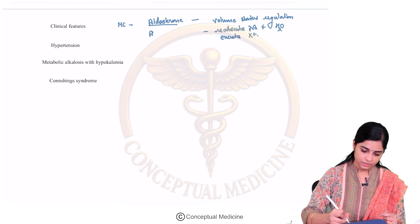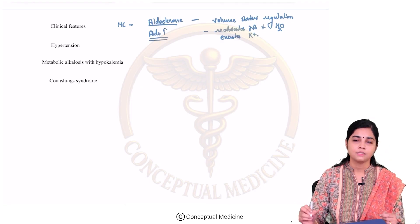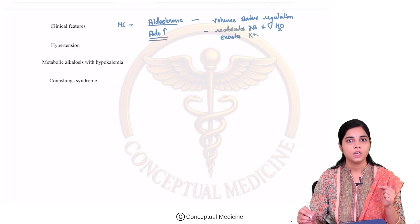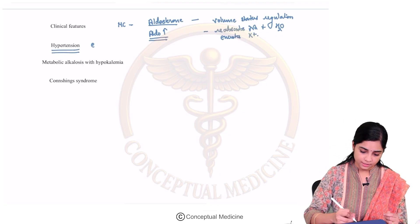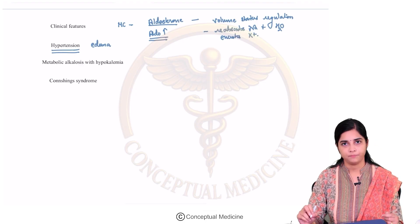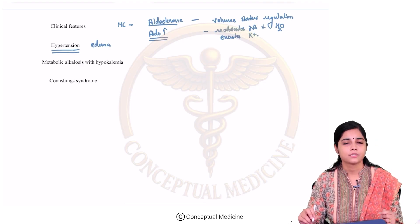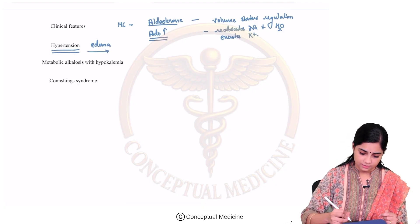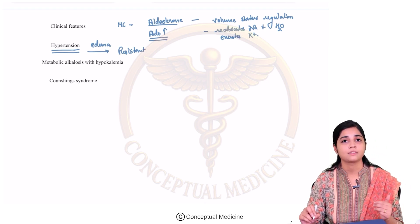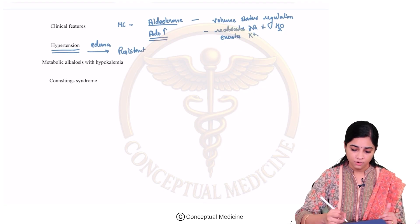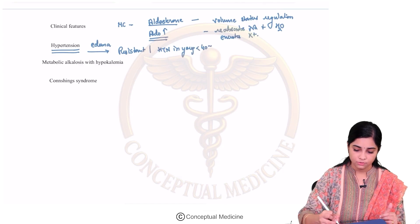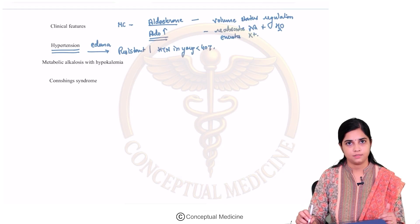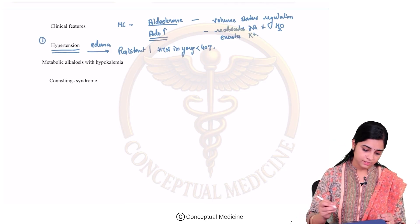If aldosterone is in excess, there is more sodium and water retention, causing hypertension. In certain individuals it can be associated with edema as well. Hyperaldosteronism is one of the causes for resistant hypertension — an individual requiring more than three classes of antihypertensives to control hypertension, or hypertension in a young individual less than 40 years of age. You have to think about mineralocorticoid excess.